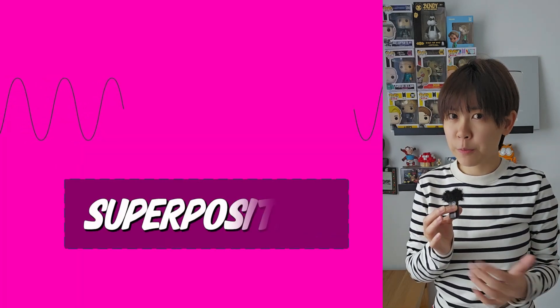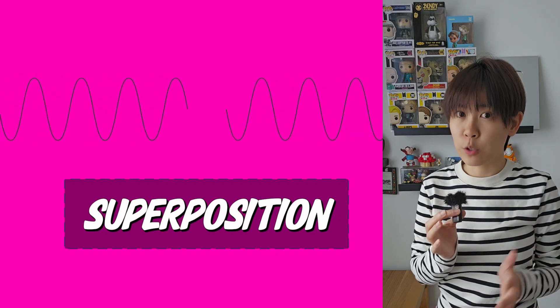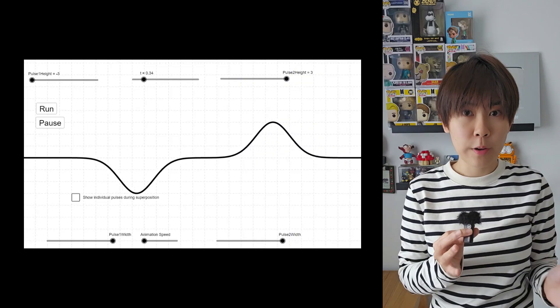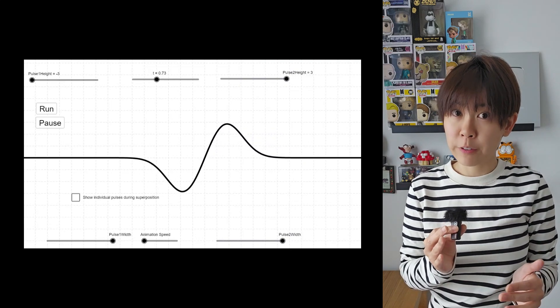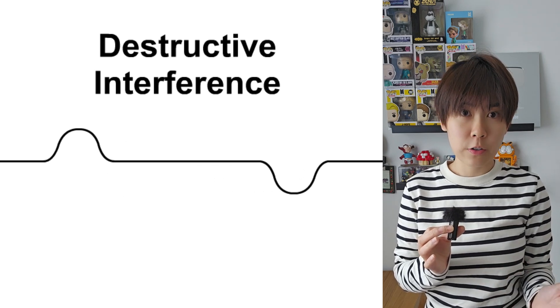But how does that help cancel the ambient noise around you? The inverted sound waves from your headphones move in the opposite direction to meet the waves of the noise. If the microphone creates a sound wave that matches the amplitude of the noise, but is oscillating in opposite phase, then the peaks of one wave will overlap with the troughs of the other. When you add them together, they cancel. This process is known as destructive interference.